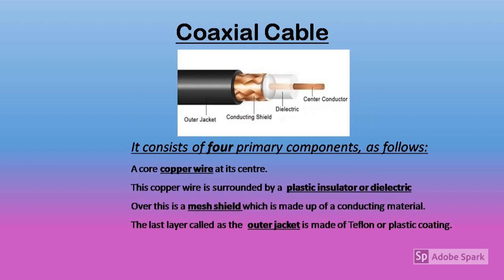At the center there is a thick copper wire — thick because thin copper wires can break easily. This copper wire is covered by an insulator or dielectric, which is a poor conductor of electric current, and it prevents signals from escaping into the atmosphere. Over this is a mesh shield made of braided copper or aluminium. The outermost layer, the outer jacket, is made of Teflon or plastic coating and protects the inner layers from physical damage such as fire and water.